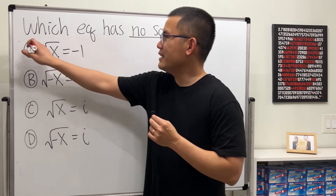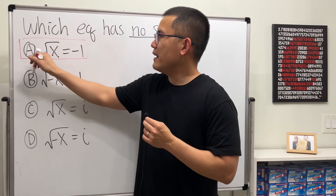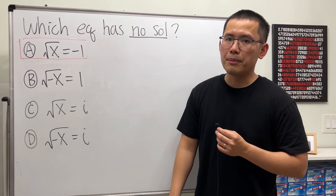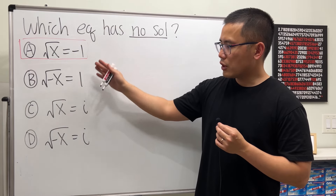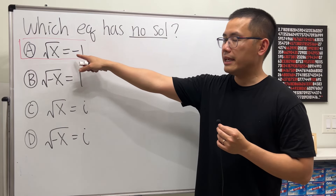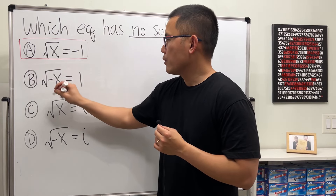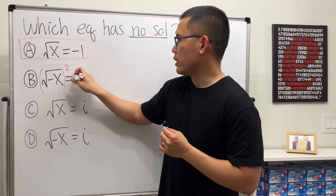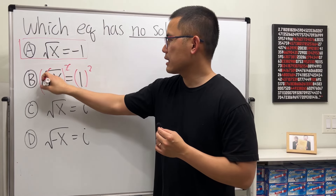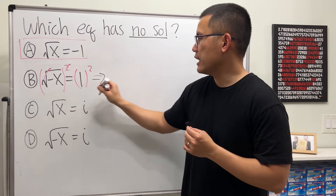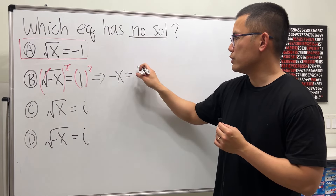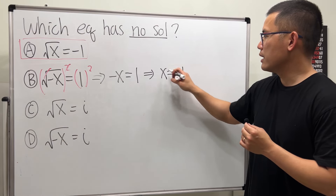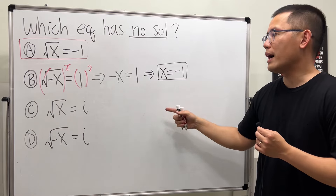The answer is A. The output of a square root cannot be a negative number, not even if you use complex numbers. Let me solve the other ones for you. For B, we have square root of negative x equals 1. This one is positive, so go ahead and square both sides — they cancel. We get negative x equals 1 squared, which is 1. Divide both sides by negative, and you get x equals negative 1.